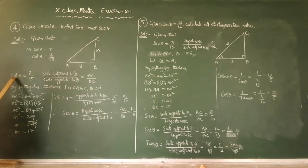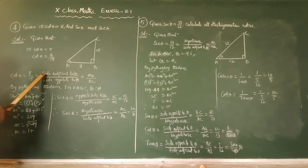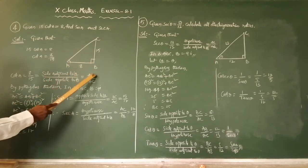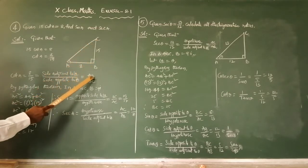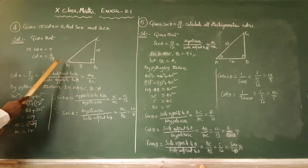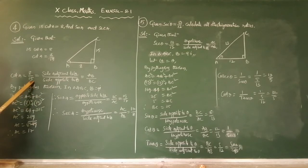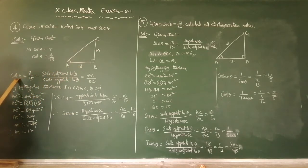The definition of cot A is very very important. Cot A means — A is the angle — it is the side adjacent to angle A divided by the side opposite to angle A. That is AB by BC. AB value is 8 and BC value is 15. So in this right angle triangle, we know two sides from cot A equals 8 by 15.